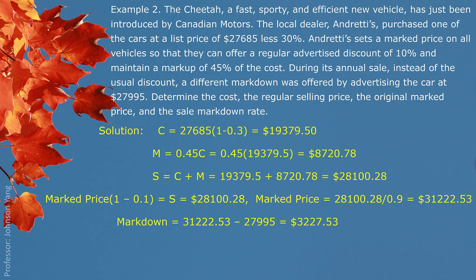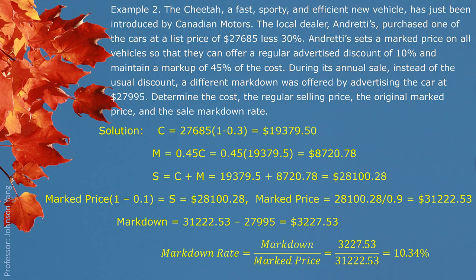Since the regular 10% discount is offered based on marked price, the sale markdown should also be based on marked price. The sale price is $27,995, so the markdown = $31,222.53 - $27,995 = $3,227.53. The markdown rate = $3,227.53 divided by $31,222.53 = 10.34%. So the so-called special sale only adds a tiny 0.34% more than the regular 10% discount.